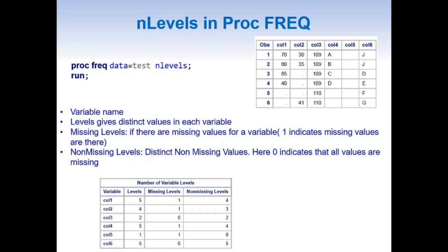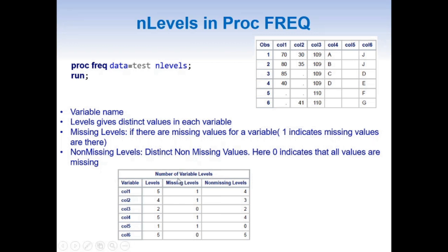Once we give the NLEVELS option, we get a lot of results, among which we are interested in 'Number of Variable Levels.' This table has four important columns. The first is 'Variable,' which gives information about variables in our dataset. The second is 'Levels,' which gives distinct values in each variable. For example, col1 has values 70, 80, 85, 40 and two missing values — since only one missing value counts as unique, we have five unique values.